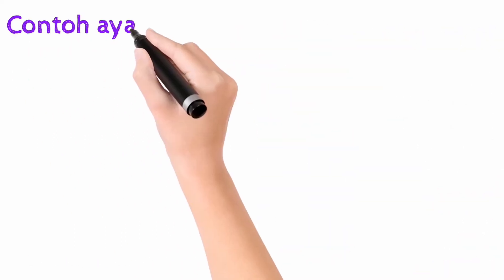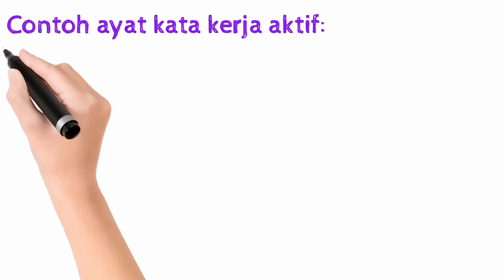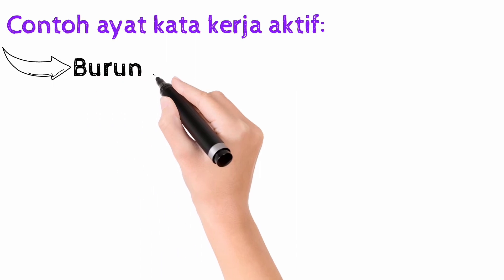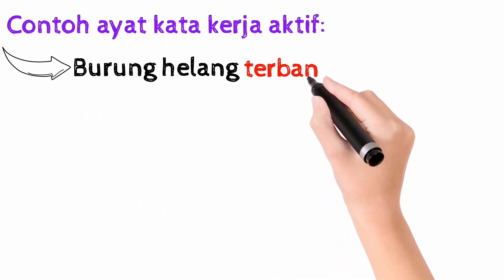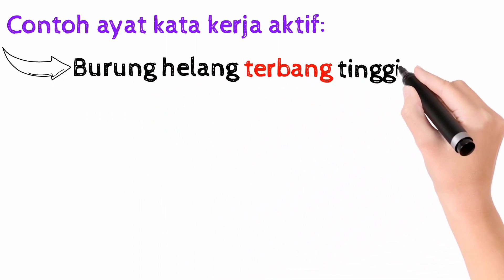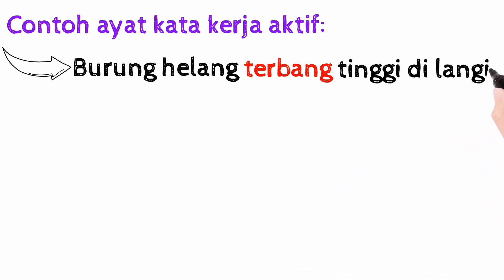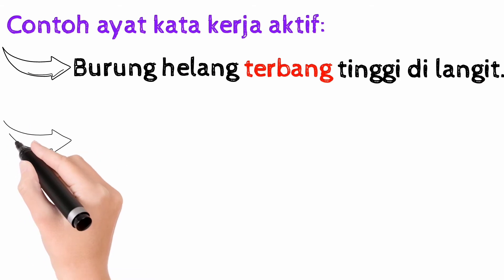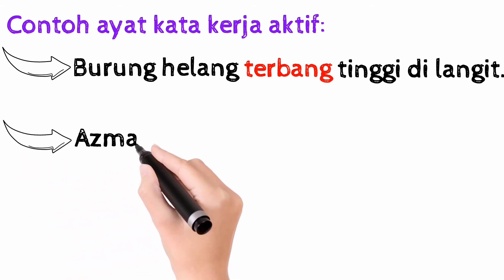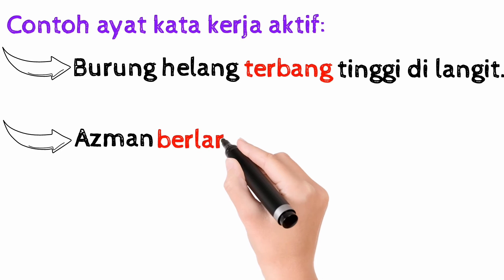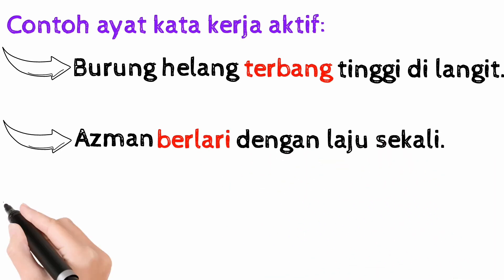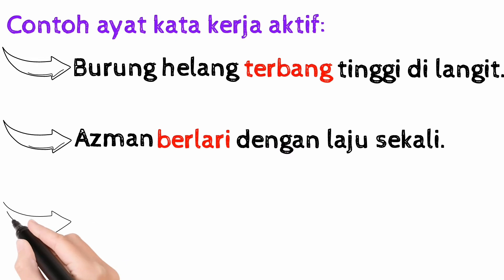Mari kita lihat contoh kata kerja aktif yang digunakan di dalam ayat. Contoh yang pertama adalah, burung helang terbang tinggi di langit. Kata kerja aktif yang digunakan di sini adalah terbang. Contoh yang kedua, Azman berlari dengan laju sekali. Kata kerja aktif yang digunakan adalah berlari.